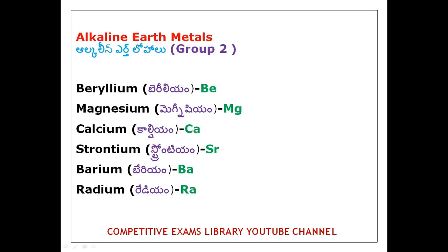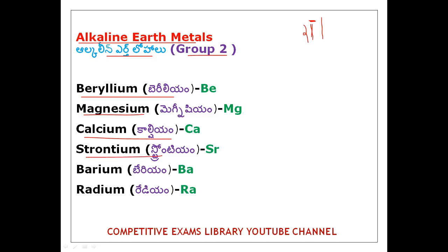Next is Alkaline Earth Metals. Alkaline Earth Metals are Group 2. Group 1 is Alkali Metals and Group 2 is Alkaline Earth Metals. The elements are: Beryllium, Magnesium, Calcium, Strontium, Barium, Radium.